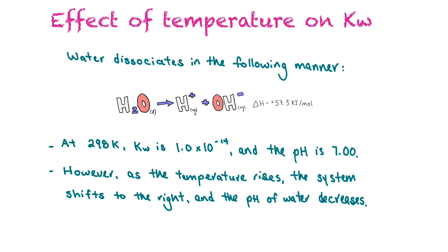At 298 Kelvin, Kw is 1.0 times 10 to the power of negative 14, which means the pH is 7. However, as temperature rises, the system will shift to the right because it's shifting away from the heat term, and the pH of water will decrease. So when we've been told that the pH of pure water is 7, that's at 298 Kelvin — at higher temperatures, it will not be 7.